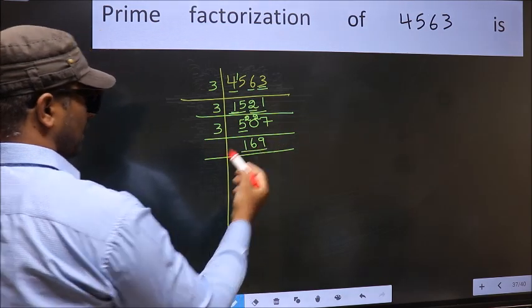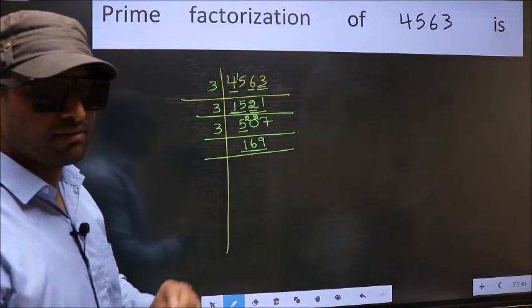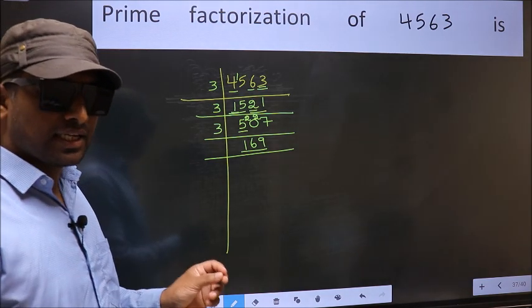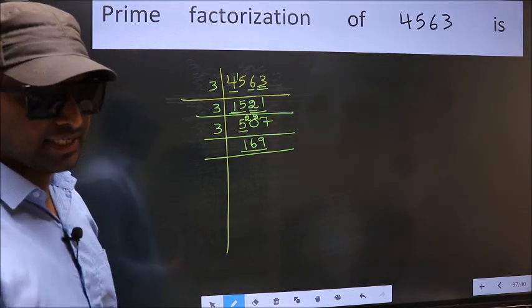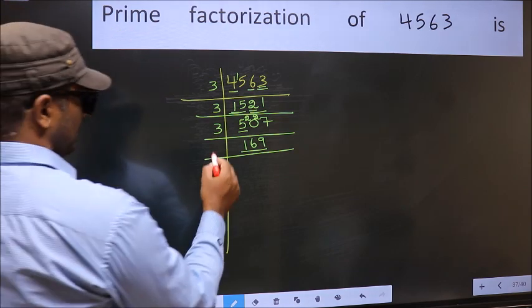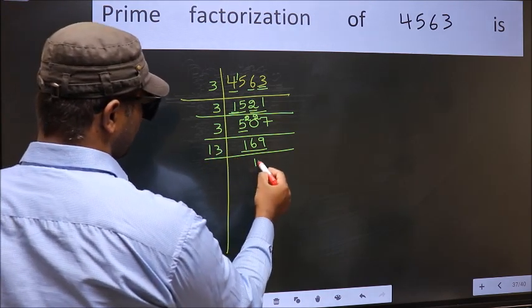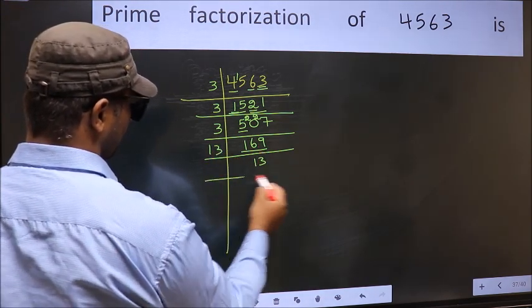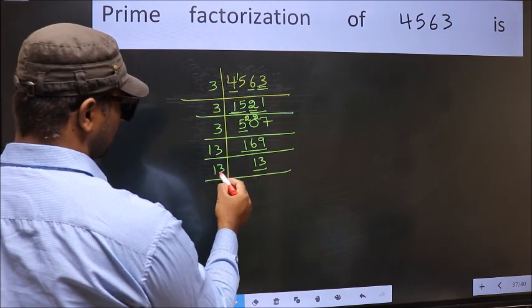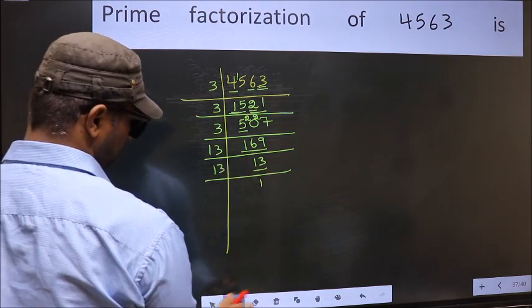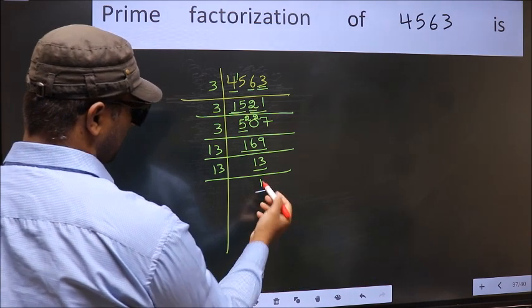Now here we have 169. Always remember 13 into 13 is 169. That is 13 times 13 is 169. Now we have 13. 13 is a prime number, so 13 times 1 is 13. So we got 1 here.